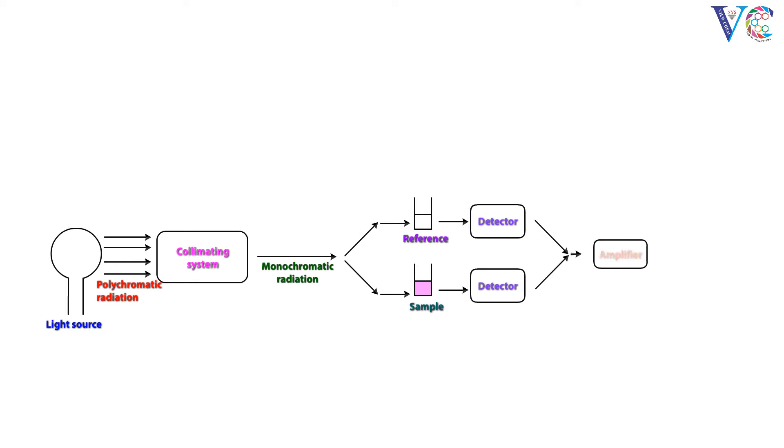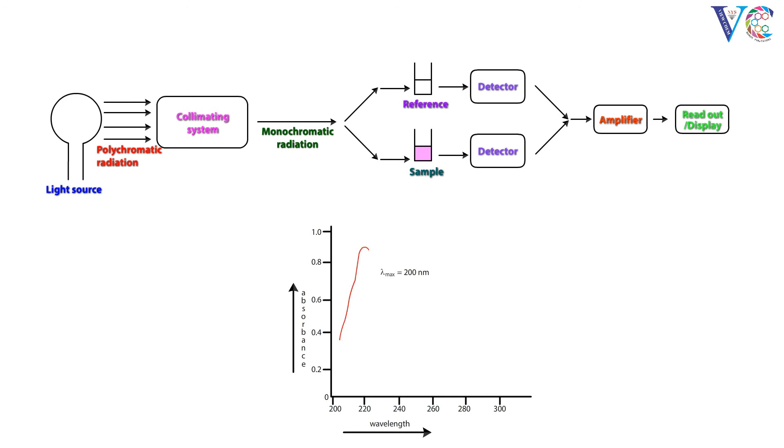The amplifier amplifies the signal many times. The amplifier connects to a recorder, which connects to a computer. The computer stores the data for later retrieval. The pen recorder draws the spectrum.